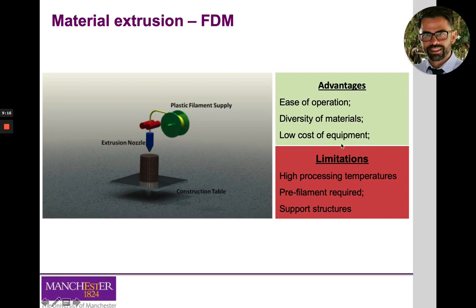General advantages of material extrusion include simplicity of operation, a wide range of materials from polymers to composites offering great flexibility, and low cost compared to other systems like selective laser sintering or VAT photopolymerization. Limitations include high processing temperatures — which can be restrictive for medical applications — the need to fabricate filaments prior to printing, which adds time and cost, and the requirement for support structures on overhanging features.